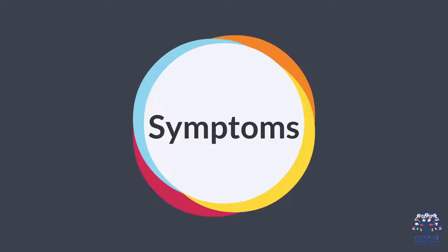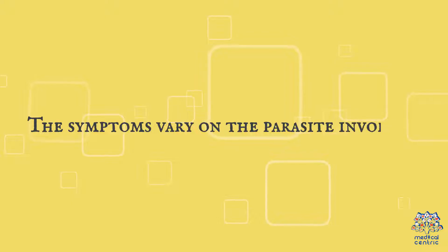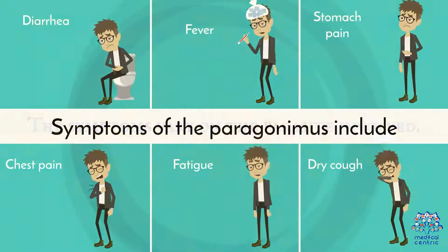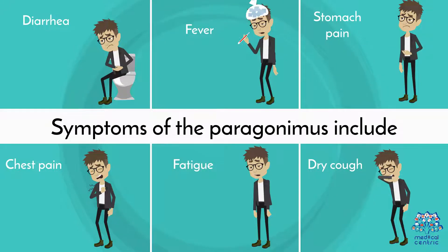Symptoms. The symptoms vary depending on the parasite involved. Symptoms of Paragonimiasis include diarrhea, fever, stomach pain, chest pain, fatigue, and dry cough.